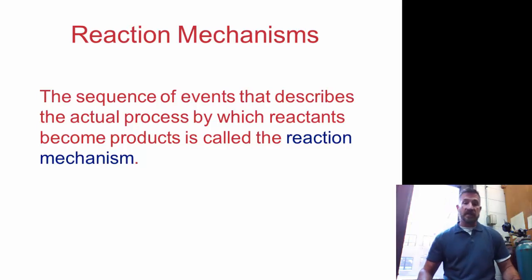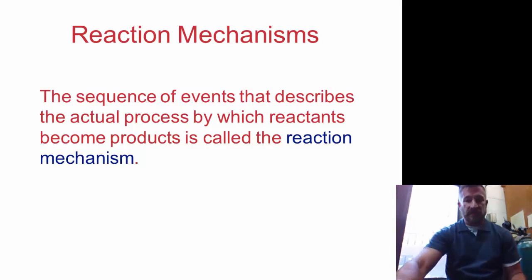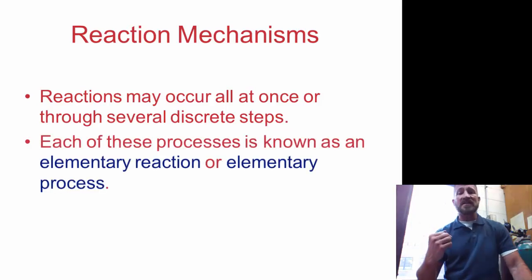And finally we're going to look at reaction mechanisms today. When we look at a reaction we only really see overall what happens. We don't see the mechanisms and that's what we're going to look at today. The sequence of events that describes the actual process by which reactants become products is a reaction mechanism. Reactions may occur all at once or through several discrete separate steps. Each of these processes is known as an elementary reaction or elementary process.